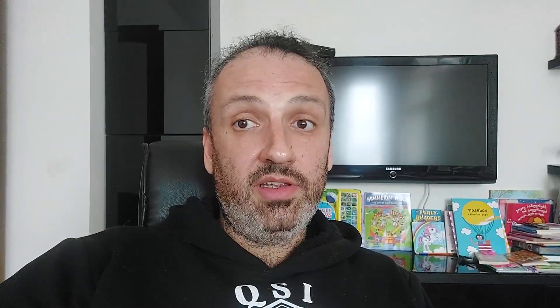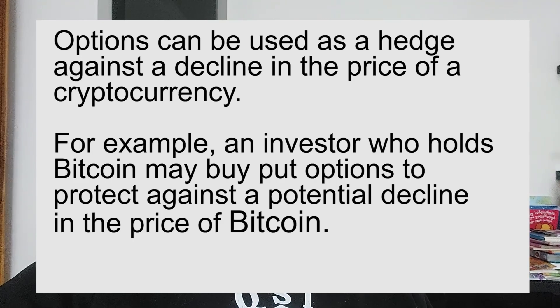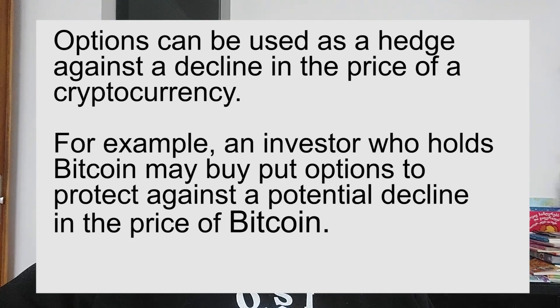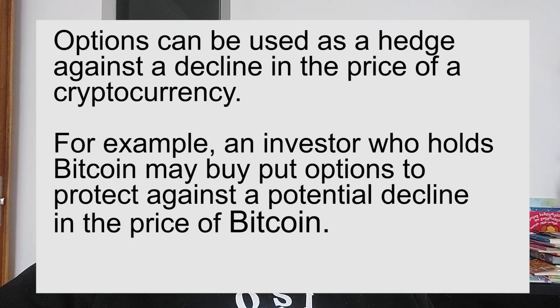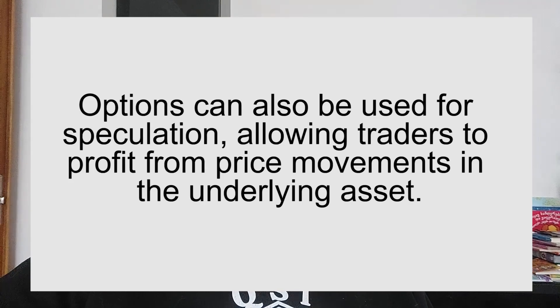Benefits of options trading for crypto. Options trading has several benefits when it comes to crypto. Hedging: options can be used as a hedge against a decline in the price of a cryptocurrency. For example, an investor who holds bitcoin may buy put options to protect against a potential decline in the price of bitcoin. Speculating: options can also be used for speculation, allowing traders to profit from price movements in an underlying asset.